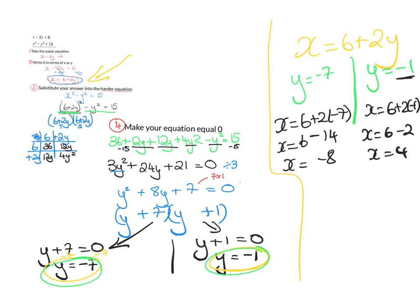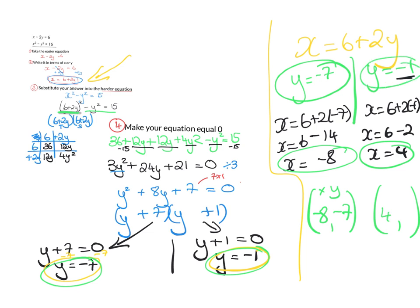So then we write our answers, and we always do them in brackets, and we always do the x value first, and then the y. So if x was minus 8, then y would be minus 7, and if x was 4, y would be minus 1.